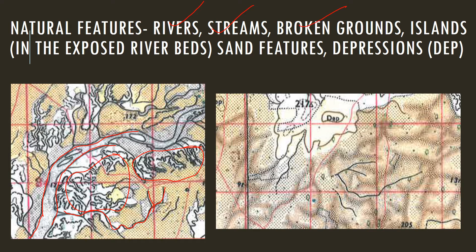Another feature is the island. In this portion we can see two islands. When a river cannot carry its load, the sand, gravel, and stones get deposited on the river bed, forming this kind of island. You can write 'river island' for this.